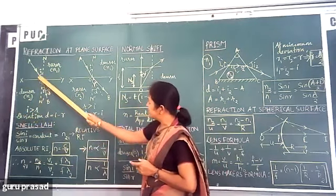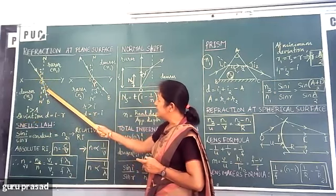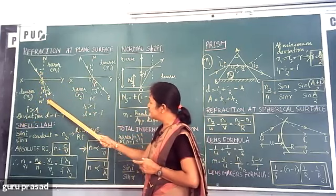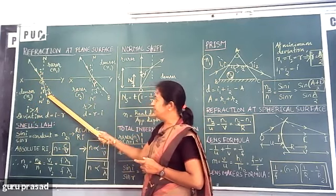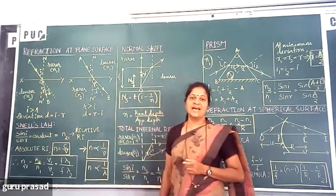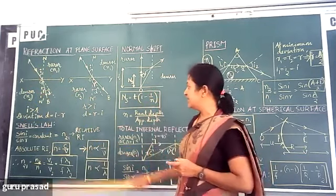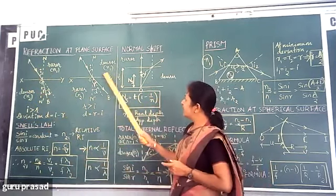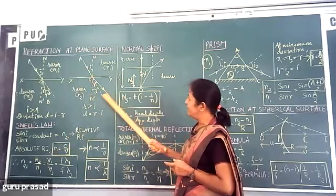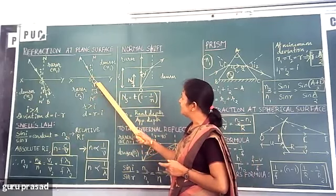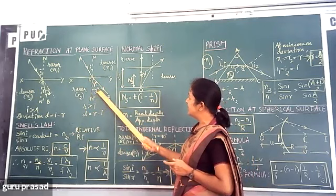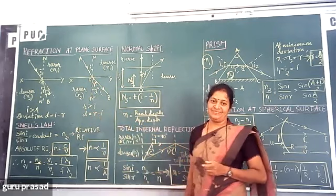The angle of deviation — this is the direction in which light would have traveled in the absence of the second medium. How much is D? It is I minus R. That is the angle of deviation when light travels from rarer to denser: I minus R. If the light ray travels from denser to rarer, then the light ray will bend away from the normal in the second medium, and R is greater than I. So angle of deviation is R minus I.